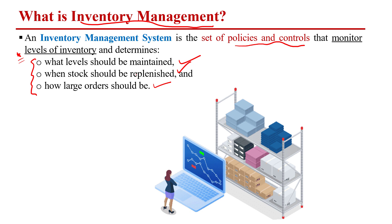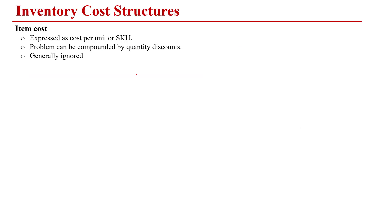When we talk about how large the order should be and how much inventory level we should maintain, there are different types of costs that are going to occur against those activities. The first cost is the item cost or the product cost, which is simply the unit cost per unit of that particular product — or you can say, the cost of the SKU.